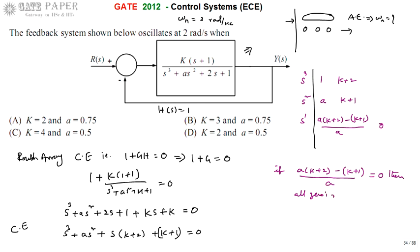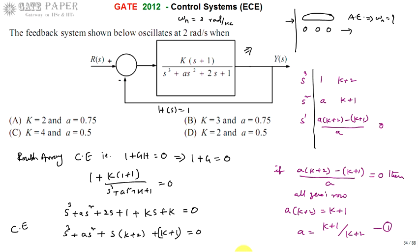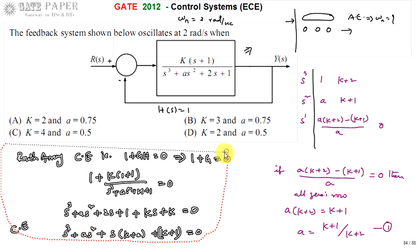Setting a·(k + 2) − (k + 1) = 0 gives the condition for oscillation at the undamped natural frequency. Rearranging, we get a = (k + 1) / (k + 2). This is our first equation for a in terms of k. The frequency of oscillation is calculated from the auxiliary equation formed from the row just above the all-zeros row.